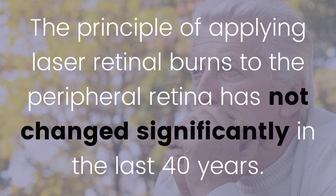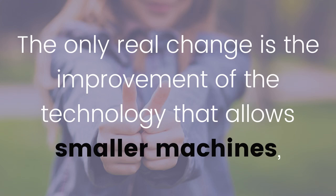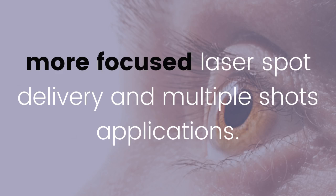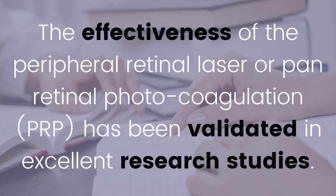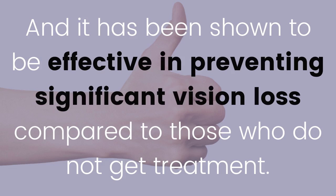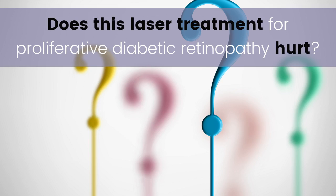The principle of applying laser retinal burns to the peripheral retina has not changed significantly in the last 40 years. The only real change is the improvement of technology that allows smaller machines, more focused laser spot delivery, and multiple shot applications. The effectiveness of peripheral retinal laser — or pan-retinal photocoagulation — has been validated in excellent research studies and shown to be effective in preventing significant vision loss compared to those who do not get treatment.